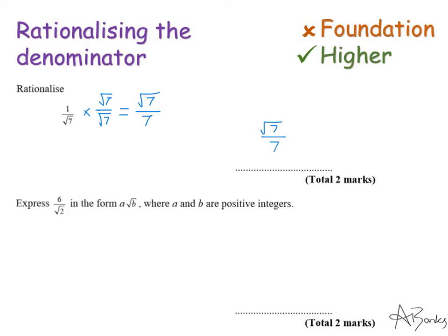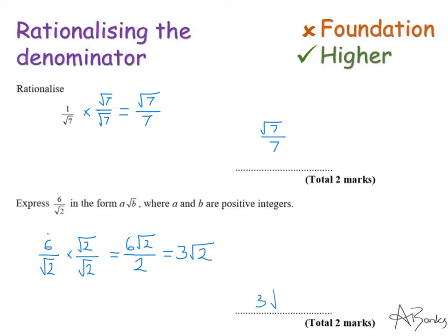Using this trick again, let's look at one that's slightly harder. Express 6 over root 2 in the form a root b, where a and b are positive integers. I'm going to rationalise the denominator, so I multiply by root 2 over root 2. On the top I have 6 times root 2, which is 6 root 2. On the denominator, root 2 times root 2 is 2. Now this gives 6 root 2 over 2, which simplifies to 3 root 2. So a is 3 and b is 2.